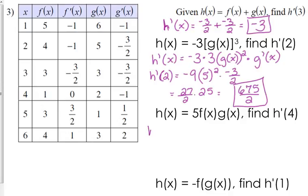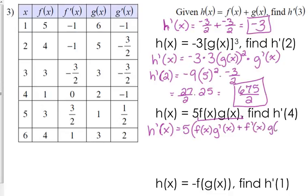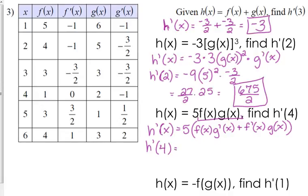Next one is a product: f of x times g of x. So h prime of x — we need to put that scalar multiple in front with parentheses — first times derivative of the second, plus derivative of the first times the second. So h prime of 4 is equal to 5 times: f of 4 is 1 times g prime of 4 is negative 1, plus f prime of 4 is 0 times g of 4 which is 2. That second term is 0, so 5 times negative 1 gives us negative 5.